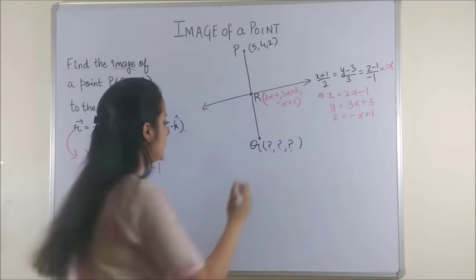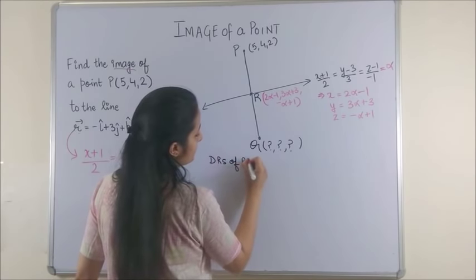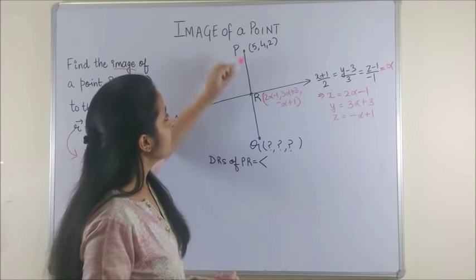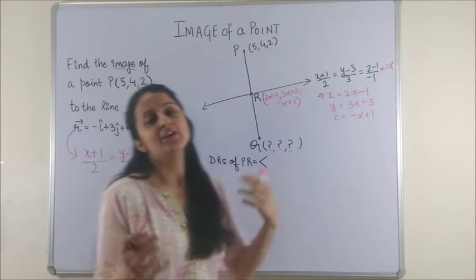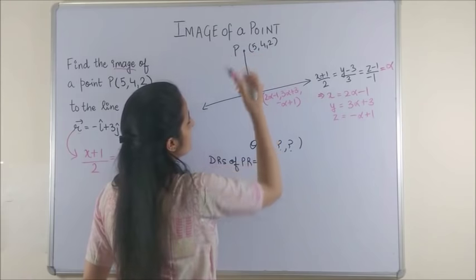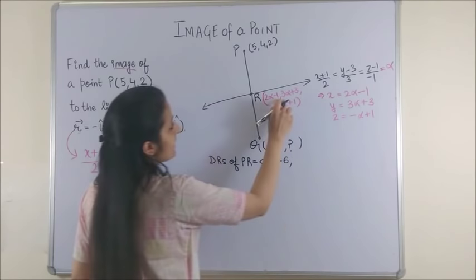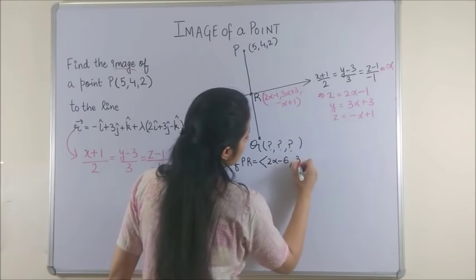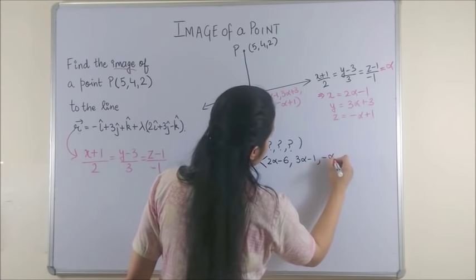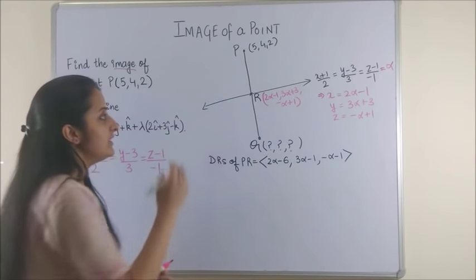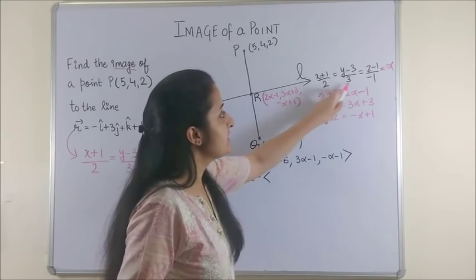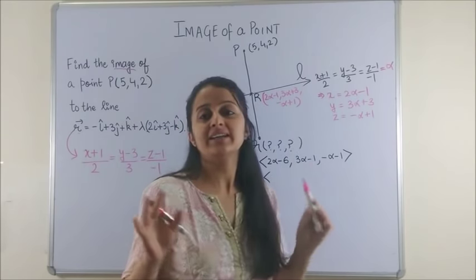Now once we have got the general point, next we find DR's of PR. You know you find the DR's of a line or a vector by subtracting the initial point from the final point. To check out the details, check the same with your straight lines in space. So here I will have 2α - 1 - 5 that gives us 2α - 6. Next 3α + 3 - 4 that gives us 3α - 1, -α + 1 - 2 that gives us -α - 1. And similarly the DR's of your given line, if I represent the line with L, they are always represented by the denominator provided you have written the line in the standard form.